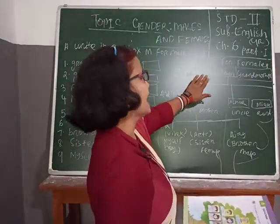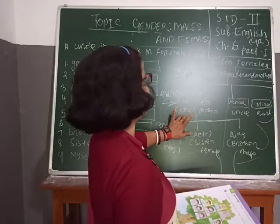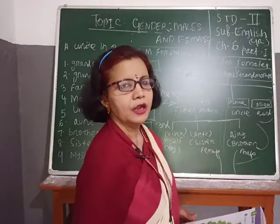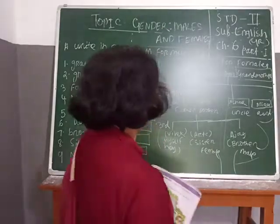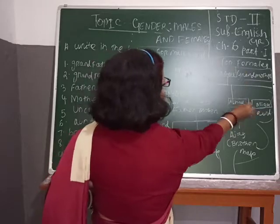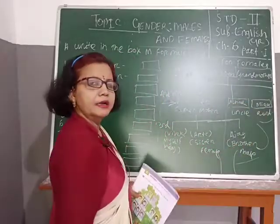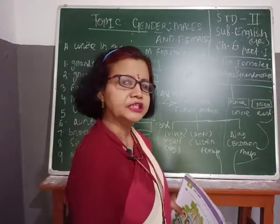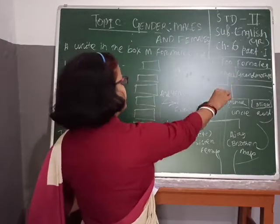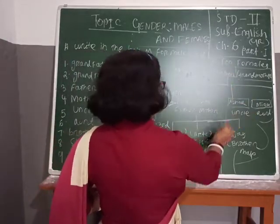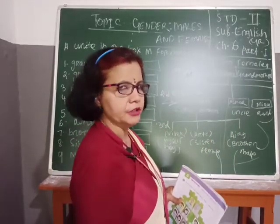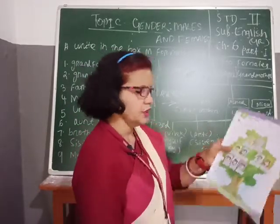Grandfather, father, uncle, Bibek, Ajay — Bibek, Arun, grandfather, Ashok, Ajay — all are male gender. And grandmother, Rekha, Meera, Arthi — all are female gender. All of you understood this family tree?